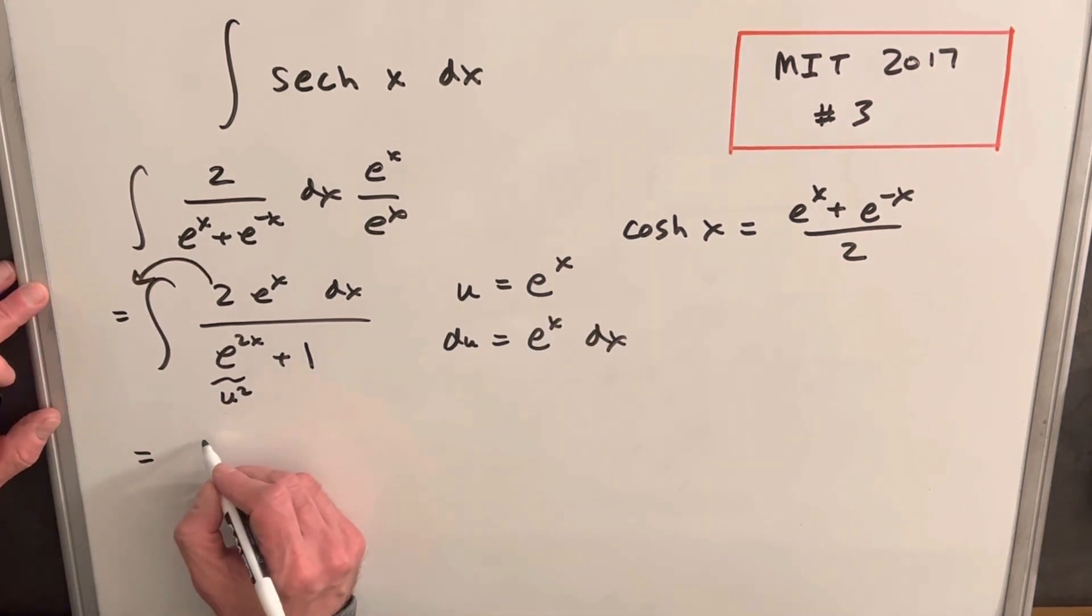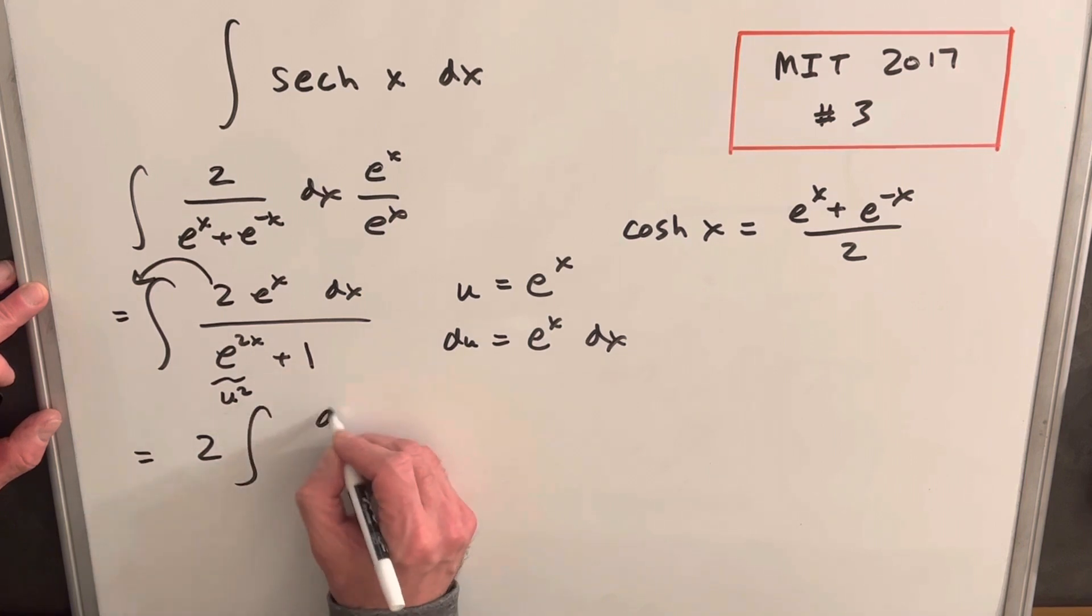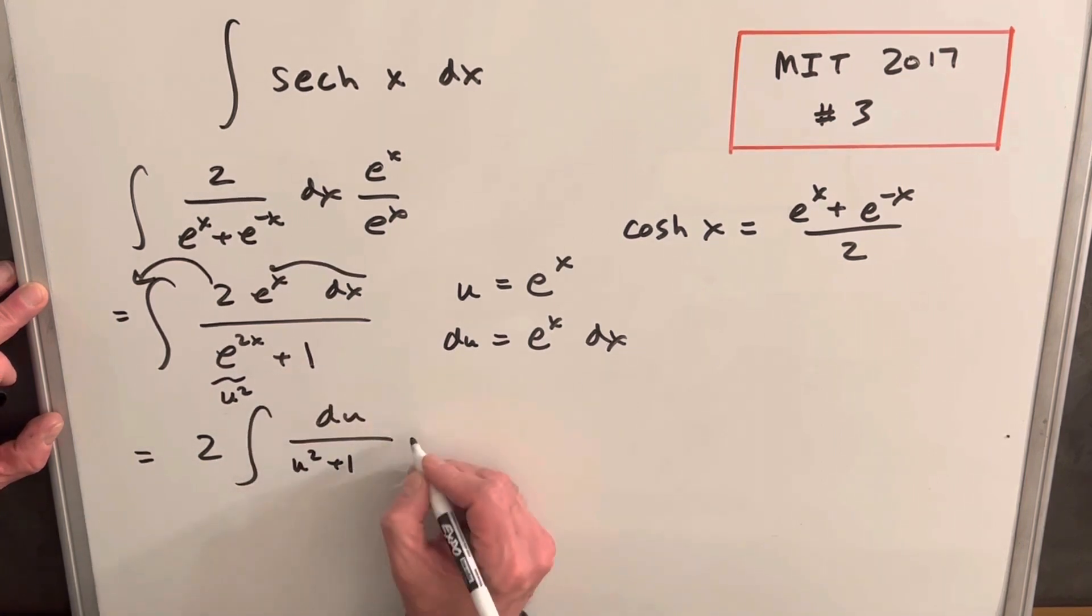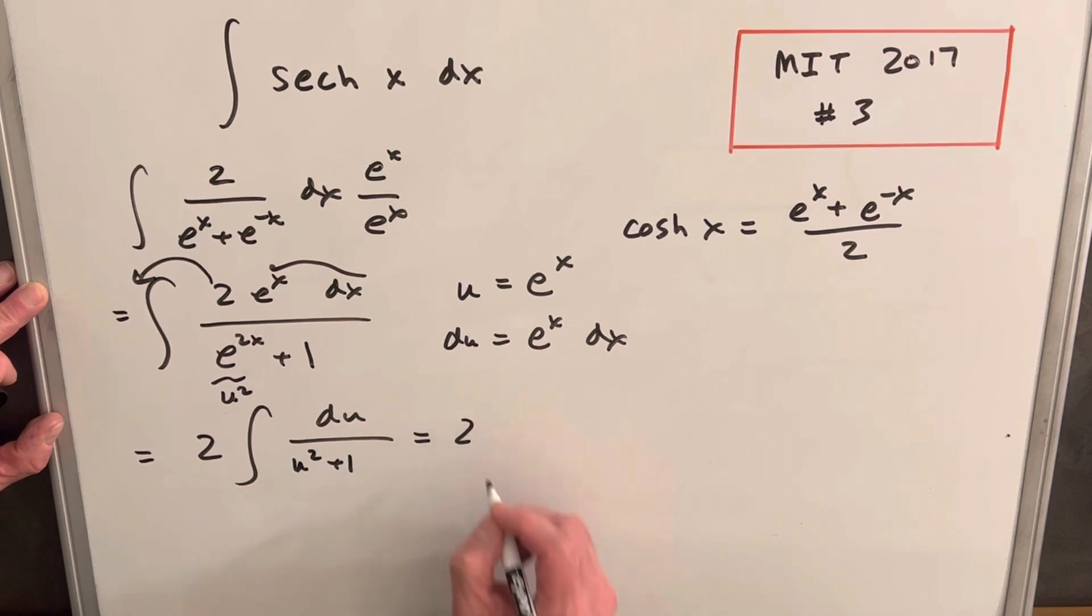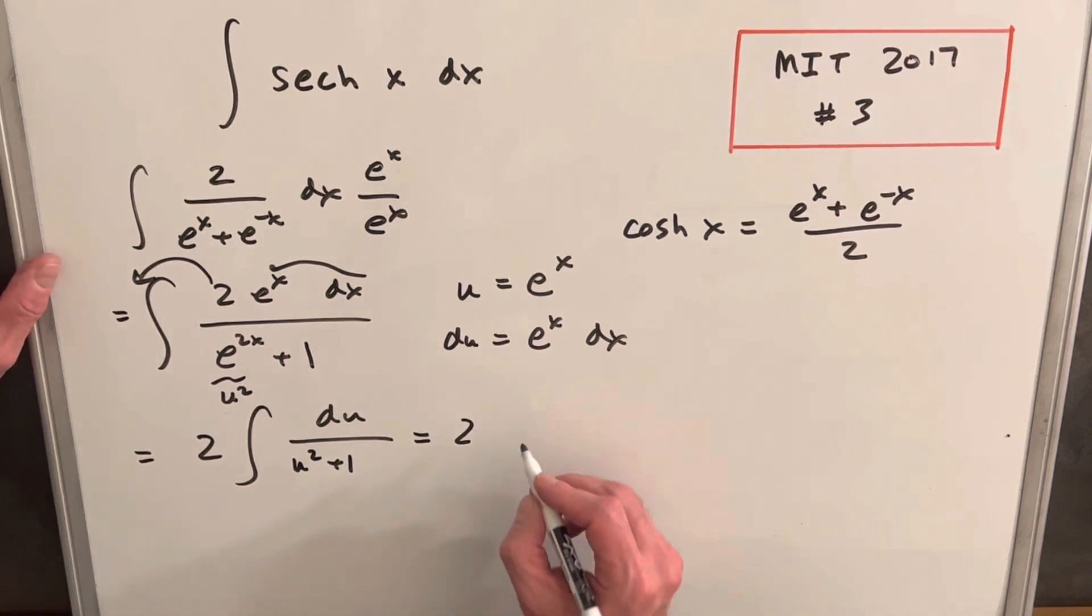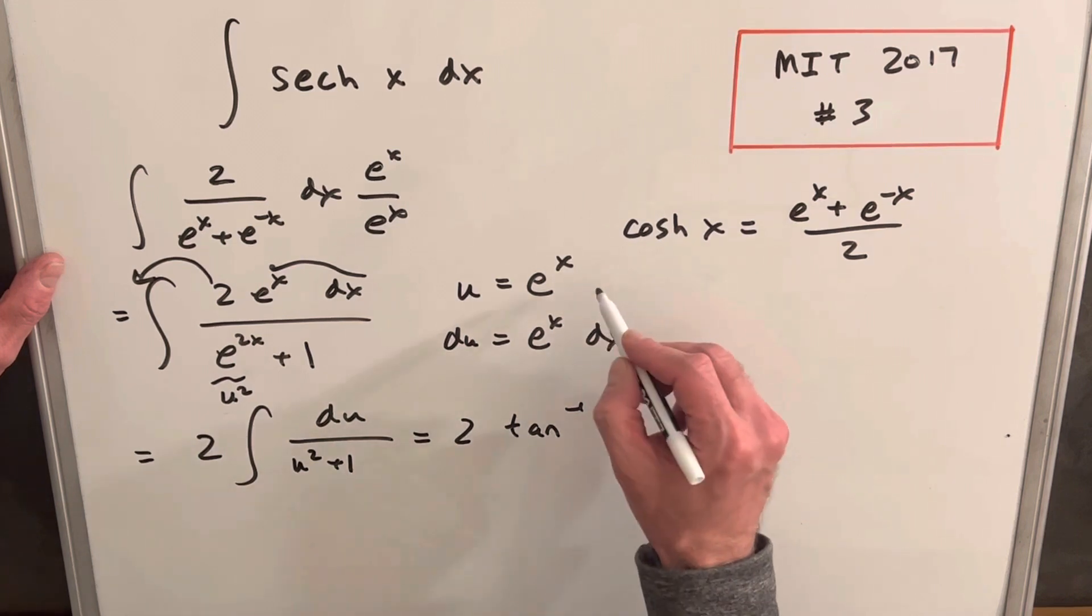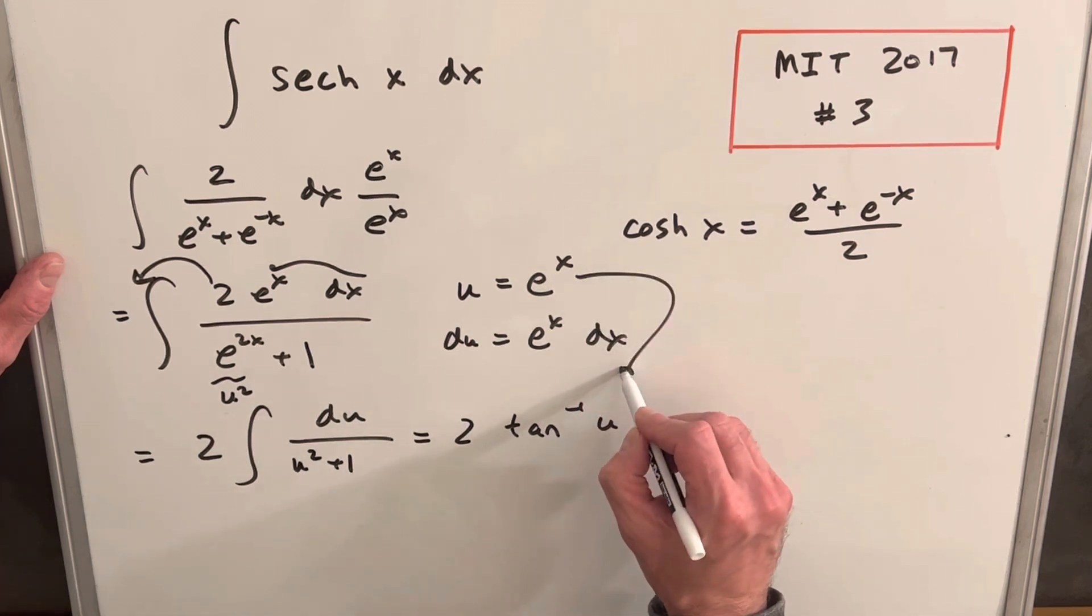Making our substitution with the 2 out front, we'll have 2 over u squared plus 1. But we know what this integral is. This is just our arctan, our inverse tangent. So we're going to be left with 2 tan inverse of u, but then we can just back substitute that.